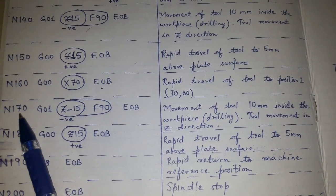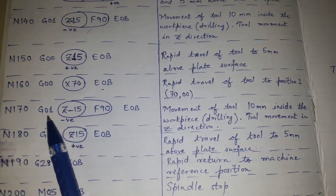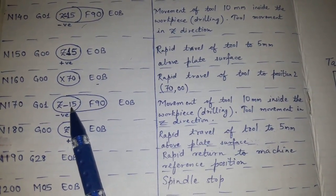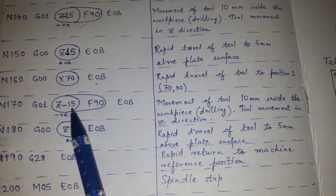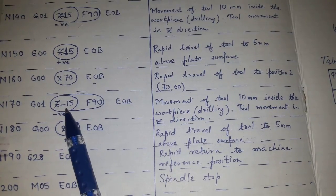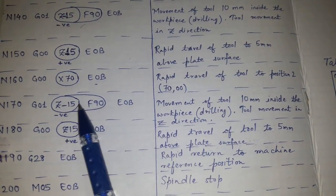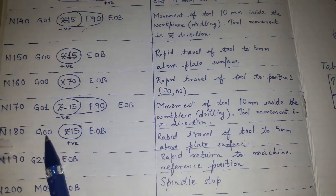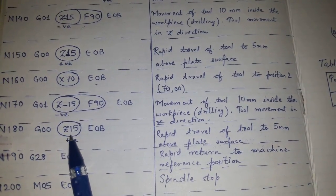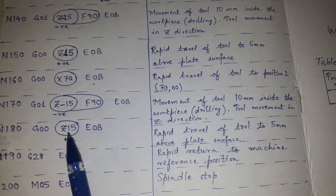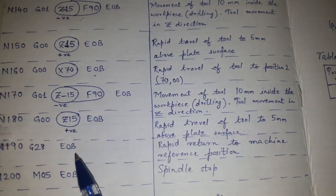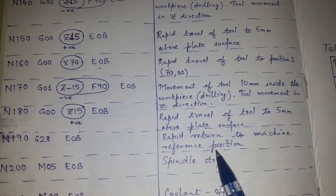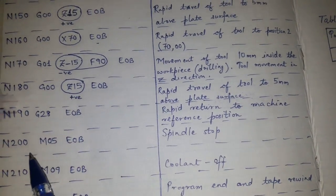N170 is G01 for linear interpolation, Z minus 15 again — 5 mm above the job plus 10 mm through the job — in incremental mode. Feed is F90. Then N180 is G00 Z15 to retract the tool — 10 mm out of the job plus 5 mm above the workpiece. N190 is G28 for rapid return to the machine reference position.